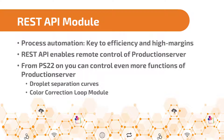Staying efficient and achieving high margins requires process automation. With our REST API module, you can remotely control ColorGate Production Server and integrate it into existing production processes, controlling a wide variety of functions. With version 22, the droplet separation curves and the ColorCorrectionLoop module have also been added to the scope of REST API-supported functions.